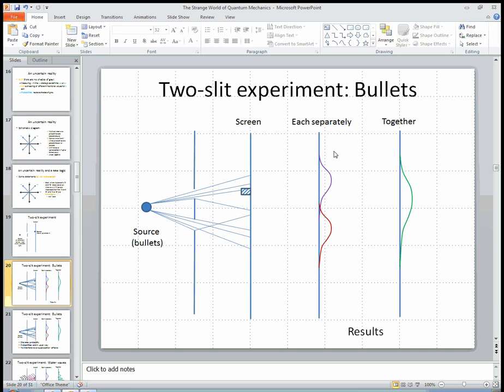And if you have one slit open, you get some sort of distribution of the bullets like this. Now this is a probability distribution. This records, if you shoot 10,000 times, how many will hit here? How many will hit here? How many will hit here? So with bullets, it's fundamentally discrete and probabilistic, which is not that surprising, classically. And here is the distribution in red if only this slit were open.